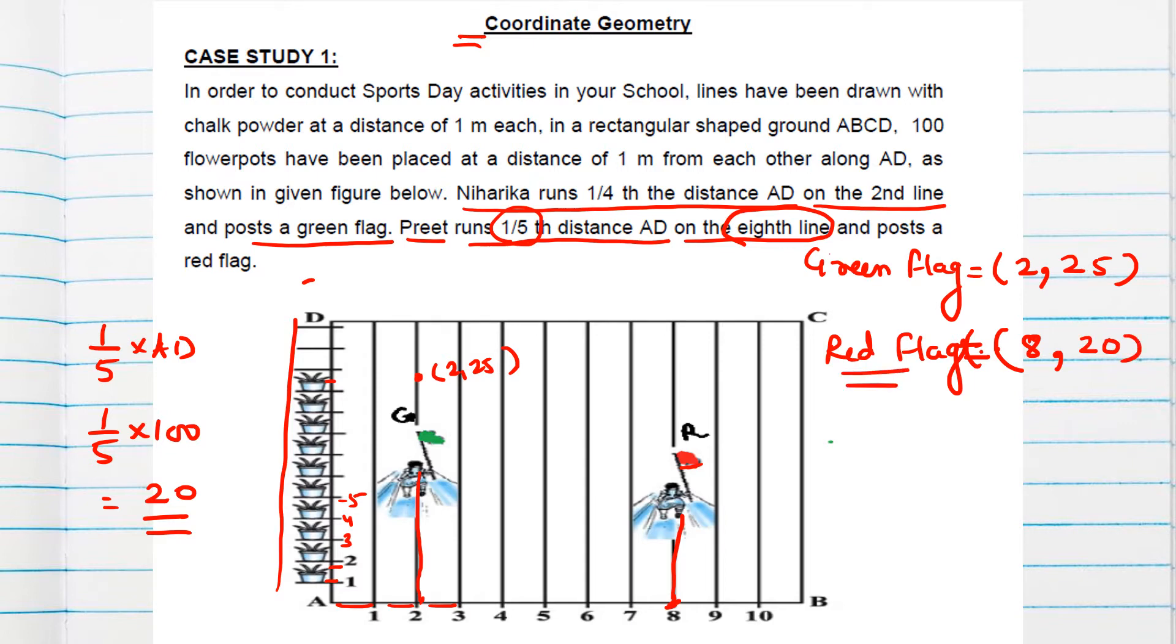Now let's see the questions. Question number one: find the position of green flag. We already found this as (2, 25), which is option A. Question number two: find the position of red flag. We counted this as (8, 20), so option C is correct.